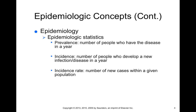There are different terms that epidemiologists will use to describe disease. The word prevalence is used to describe the total number of people who have the disease in a given year. An example of prevalence is that here in the United States, there are approximately 1.2 million people currently infected with HIV.